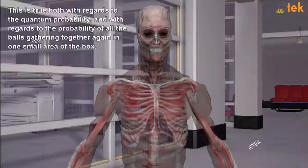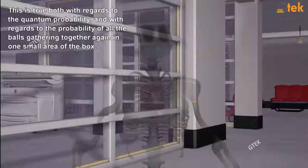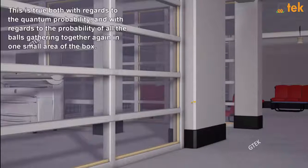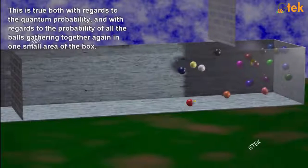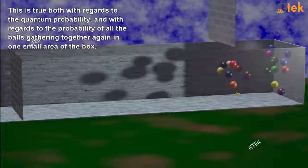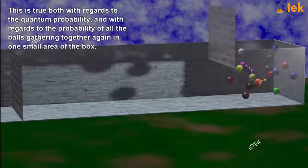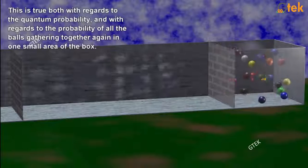This is true with regards to the quantum probability. All the balls are together again in one small area of the box. This is how nature is. You are able to see everything is enclosed in the box now.